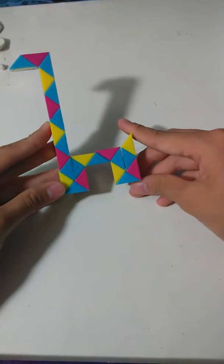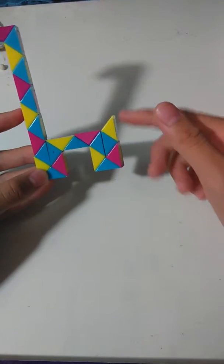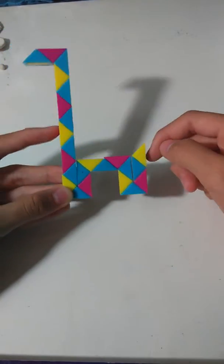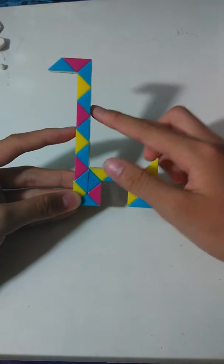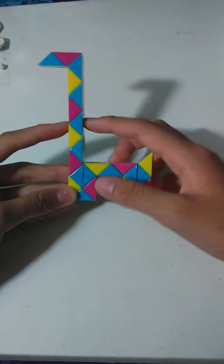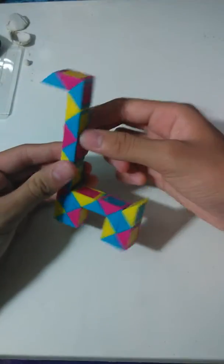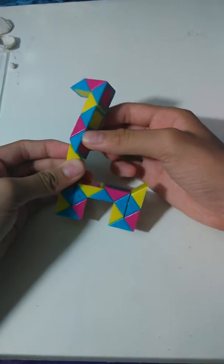From this step, you can turn this into a letter A. You count one, two, three—the third triangle here. You're going to twist on this triangle.